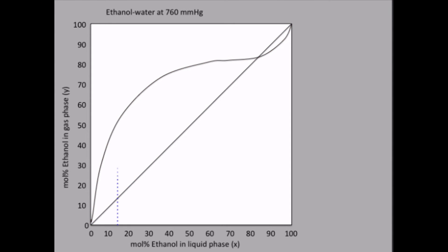And what happens if we have a 15 mol percent liquid boiling? Well, we go straight up to the system curve and find that the condensing gas that is in equilibrium with such a boiling liquid has this composition.